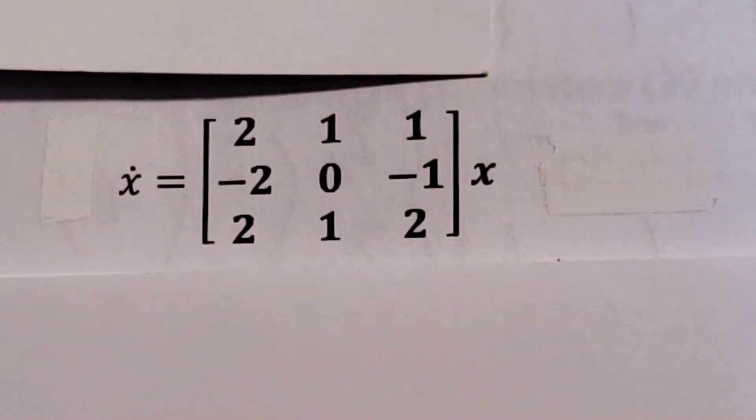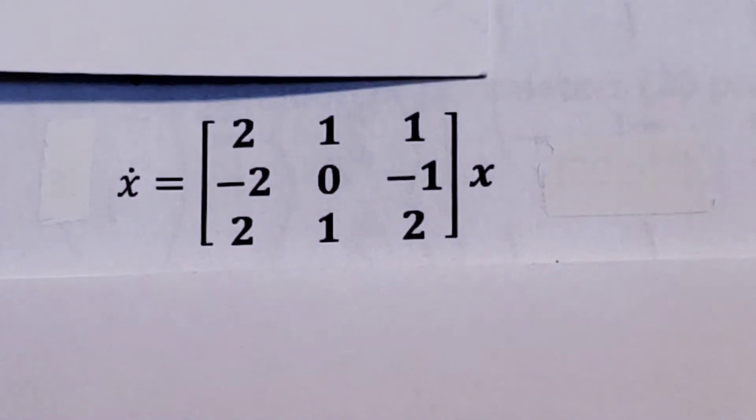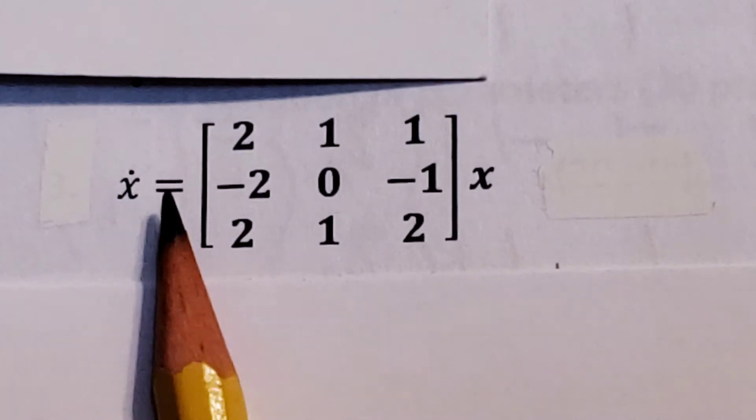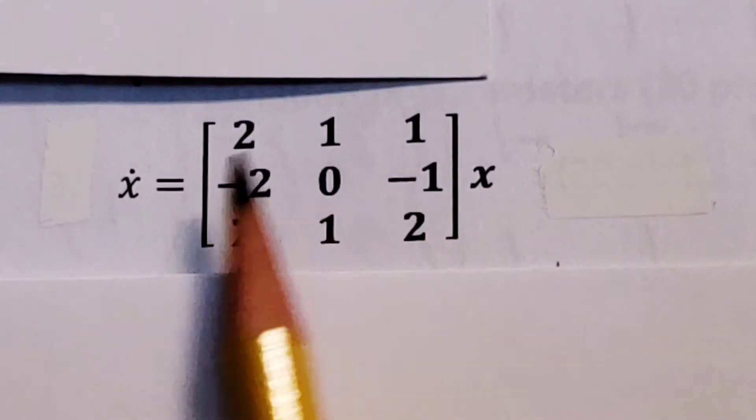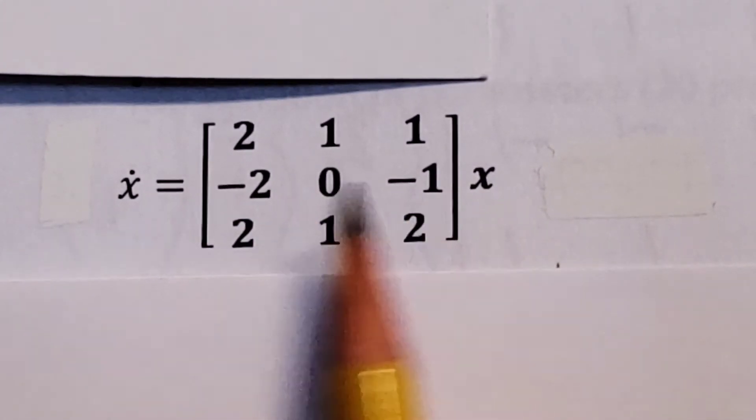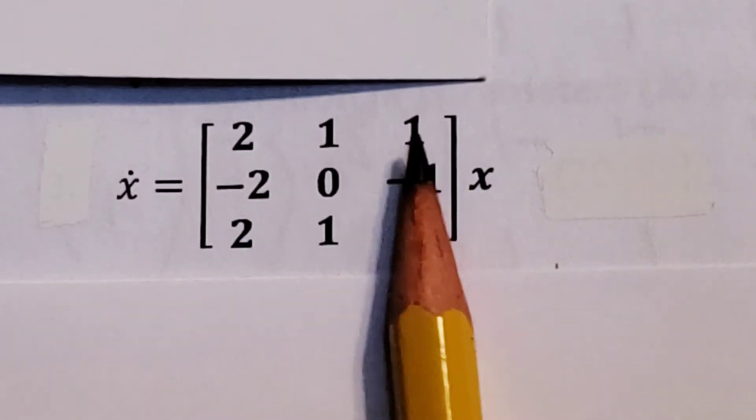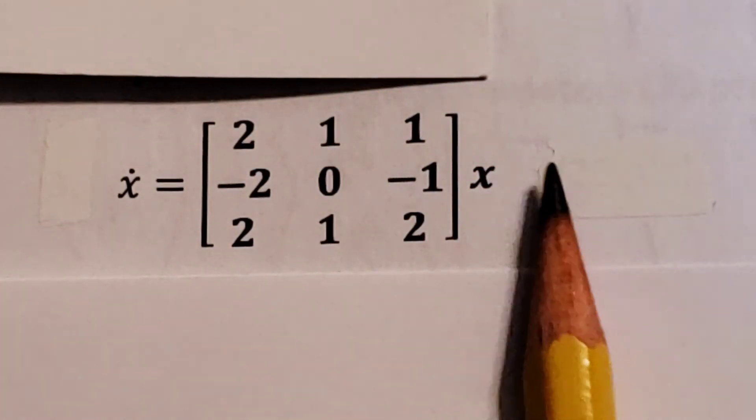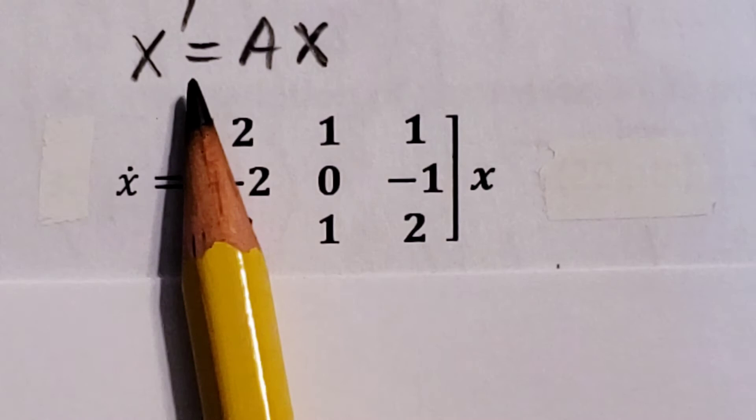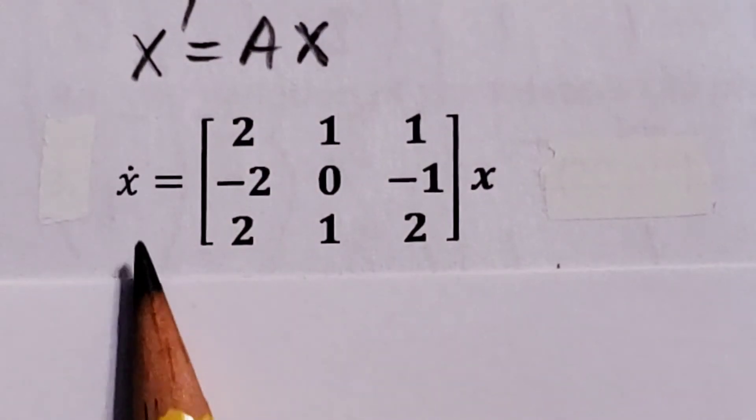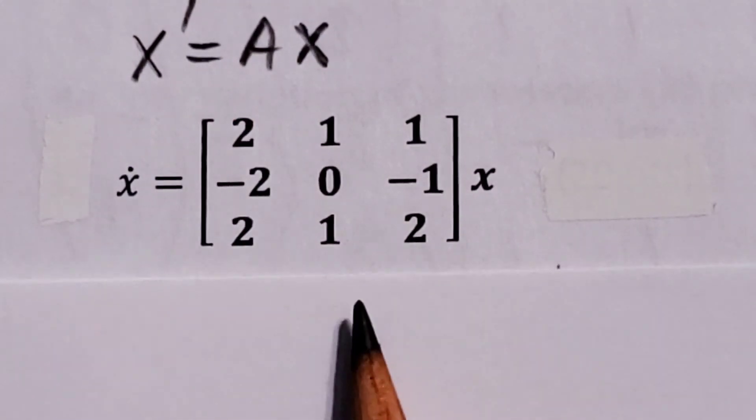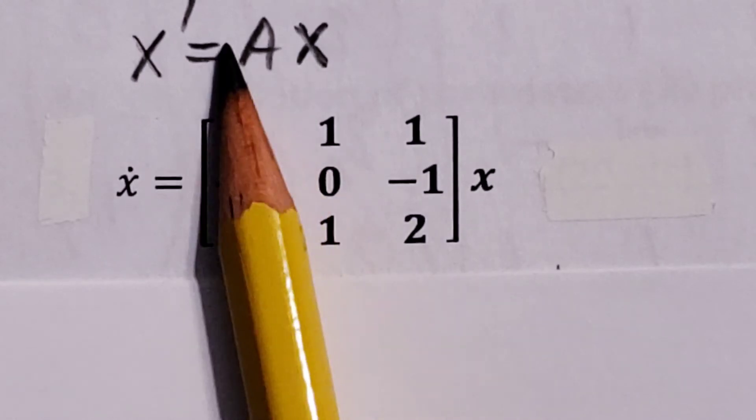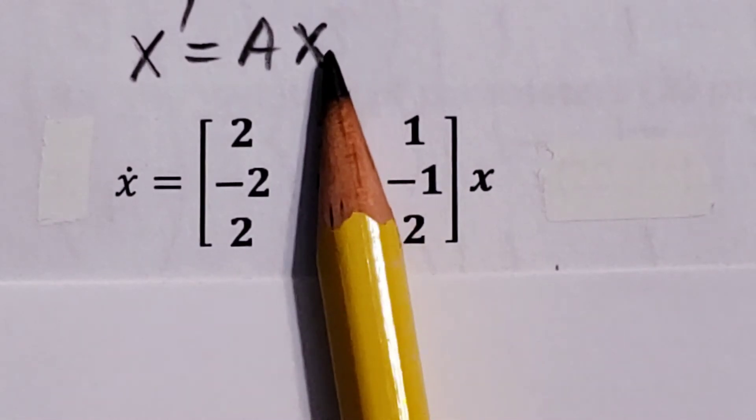Let's solve this system of differential equations. We have x' equals 2, 1, 1, negative 2, 0, negative 1, 2, 1, 2 matrix, times x. Now this is my x' and this is my matrix A, and times x.